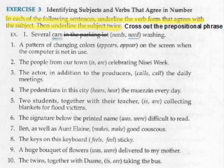Now we're going to do Exercise 3: identifying subjects and verbs that agree in number. Highlight the instructions: in each of the following sentences, underline the verb form that agrees with the subject, then underline the subject twice. I also want you to cross out the prepositional phrase, appositive phrase, or any kind of intervening phrase. Do number 1 through 10 on page 175, then number 11 through 20 on page 176. Go ahead and pause the video right now, complete all 20, then turn it back on to check your answers.